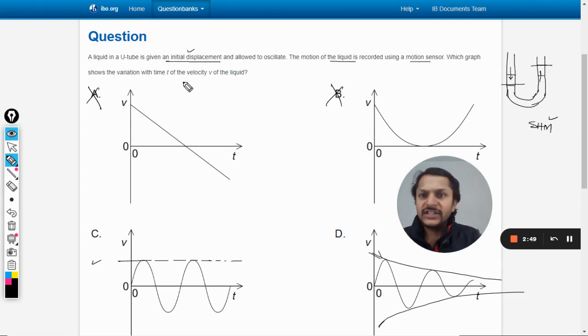...talking about the real liquid—because it is not mentioned here whether the liquid is ideal or the losses have been neglected or not—and as per my experience with IB, they generally record the losses also in these kinds of questions. So I believe there will be a loss of energy here, and the answer for that sake will be D.